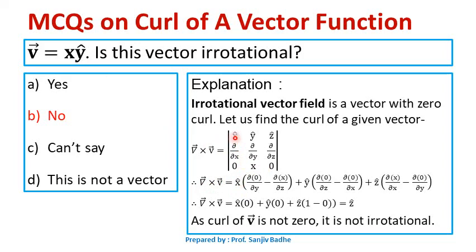Curl of V̄ = x̂(∂0/∂y − ∂x/∂z) + ŷ(∂0/∂z − ∂0/∂x) + ẑ(∂x/∂x − ∂0/∂y). Most terms result in 0; ∂x/∂x = 1 and ∂0/∂y = 0, so curl of V̄ = 0x̂ + 0ŷ + 1ẑ = ẑ. Since curl of V̄ is ẑ, which is not 0, the given vector is not irrotational. So B is the correct option.